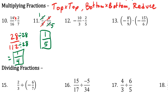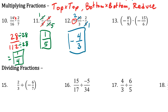For number 12, same thing — start by looking for something to reduce. I see a 10 and a 5, so 5 goes into 5 once and 5 goes into 10 twice. I don't see anything else to reduce, so now it's just time to multiply. 2 times 2 on top is 4, over 3 times 1 on bottom is 3. But we do have a negative out front — the first one is negative, the second is positive, so a negative times a positive is negative. We put our negative on there, and that's our answer.